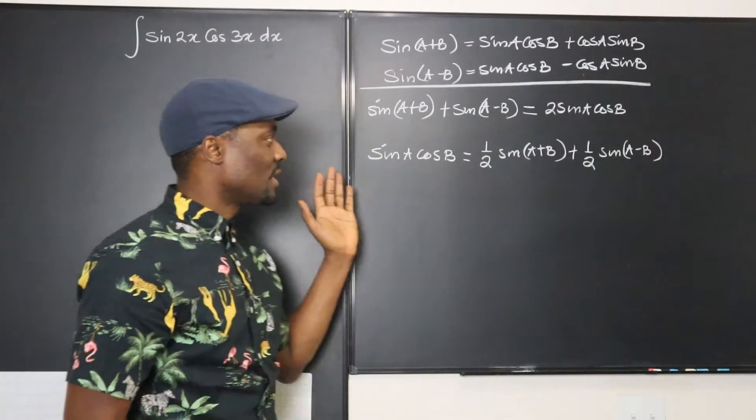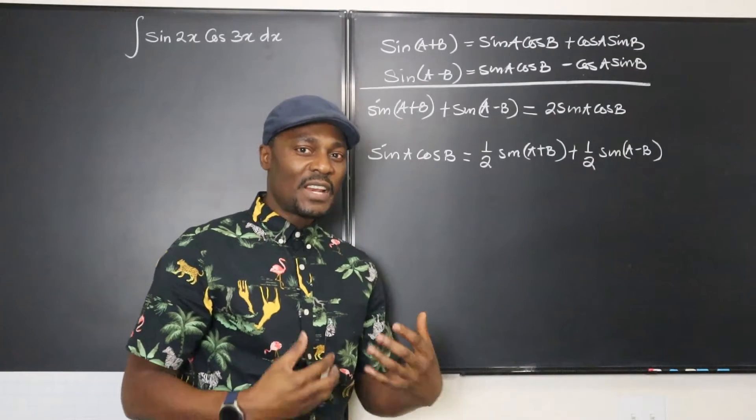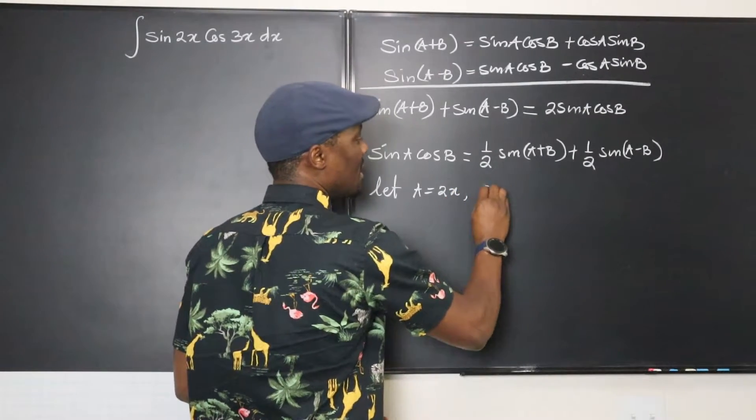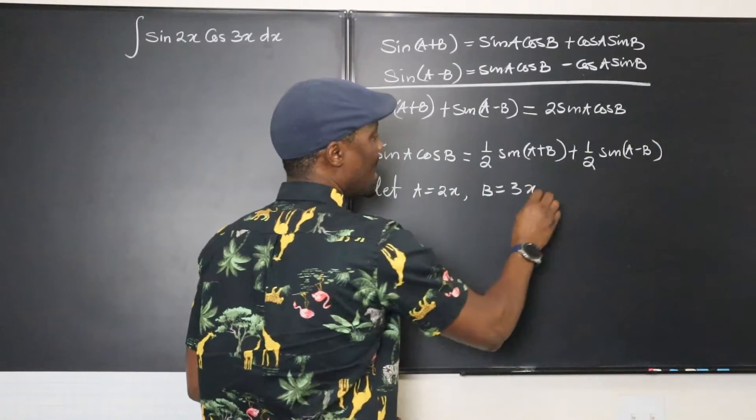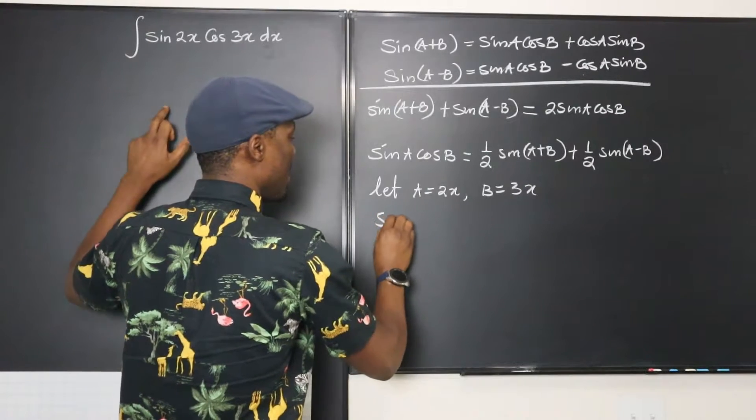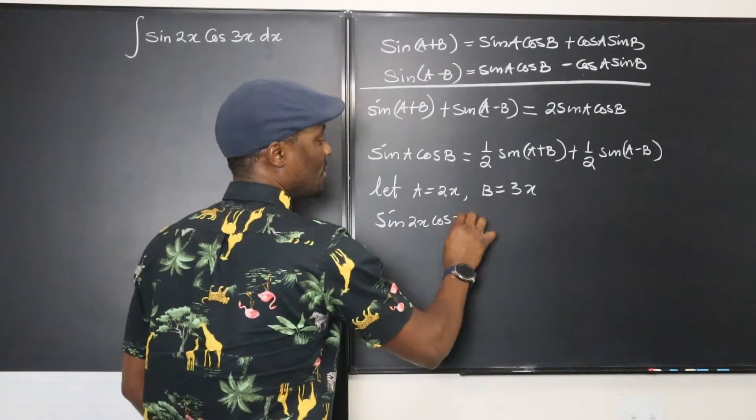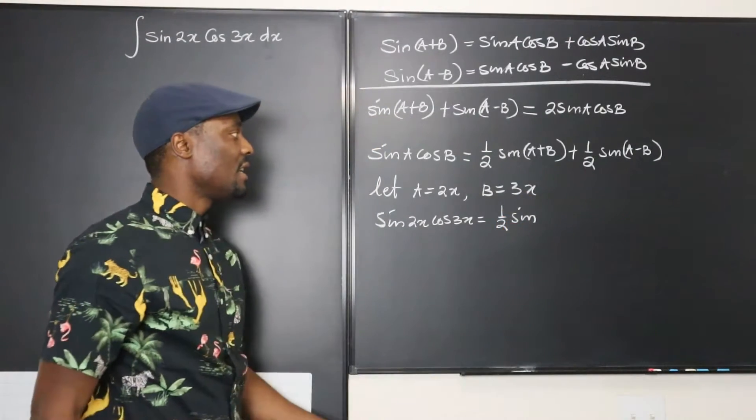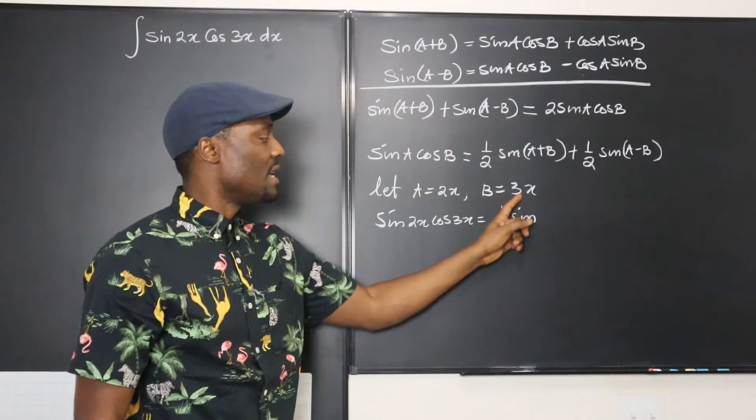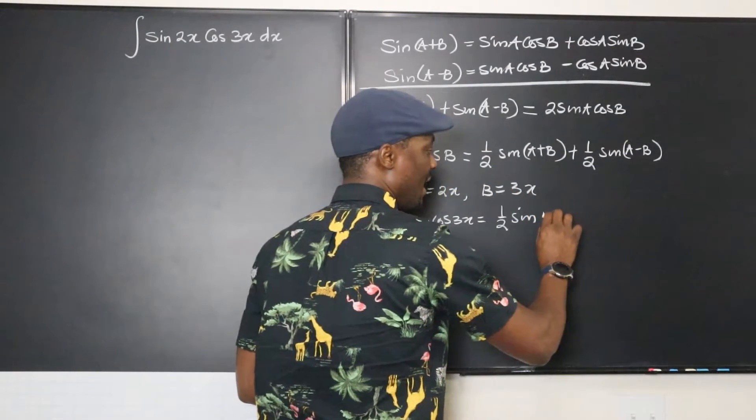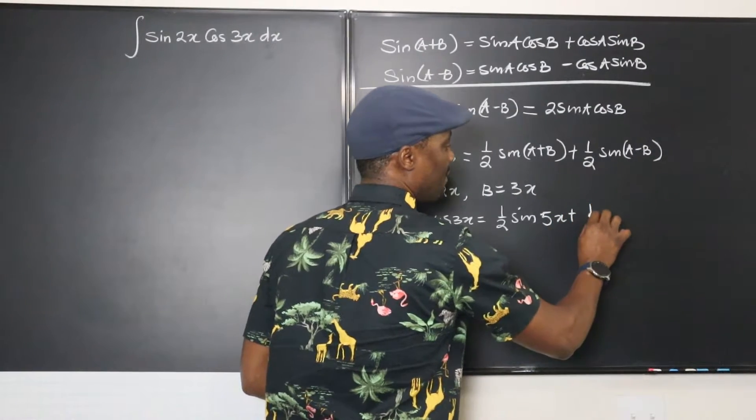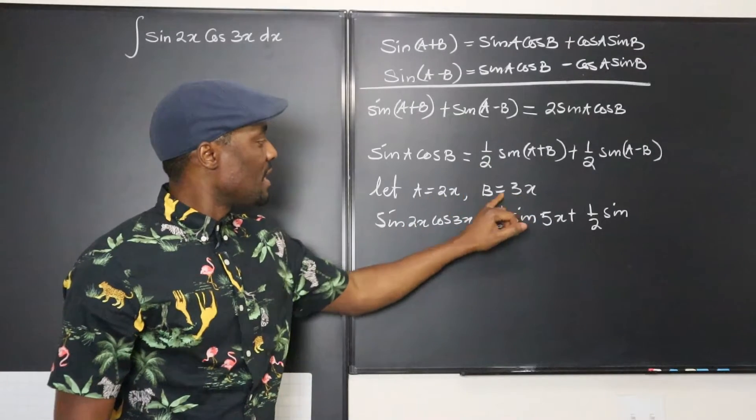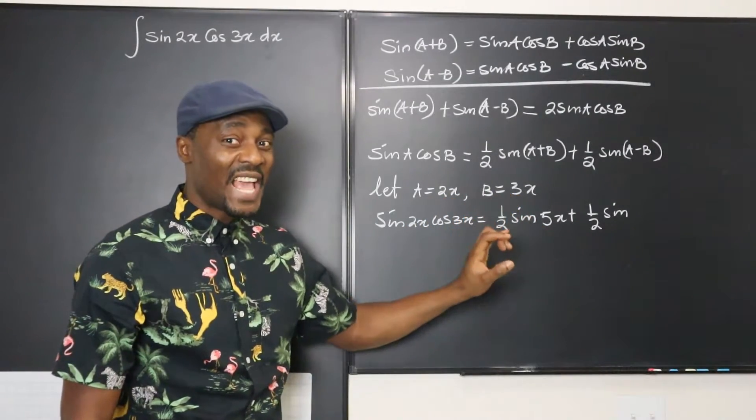So because I don't want to write too much on this side, why don't we just clean up things on this side. Let us now say let a be equal to 2x and b be equal to 3x. If we put those numbers here, we're going to end up with sine 2x cosine 3x will be equal to one half of sine, remember this is a plus b, what will a plus b be? To be 5x. So we're going to write 5x plus one half of sine, what is a minus b? That's 2x minus 3x, that's going to give us negative x.